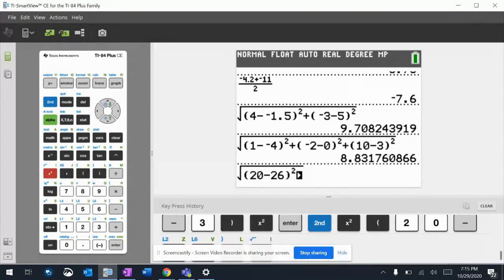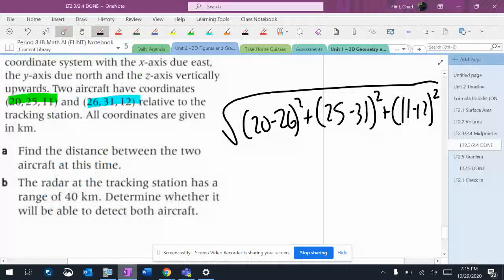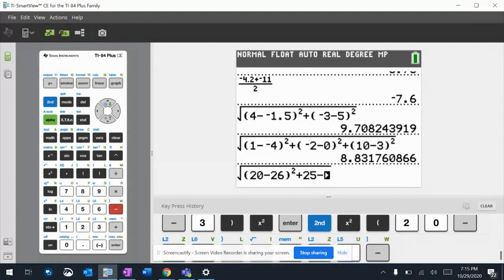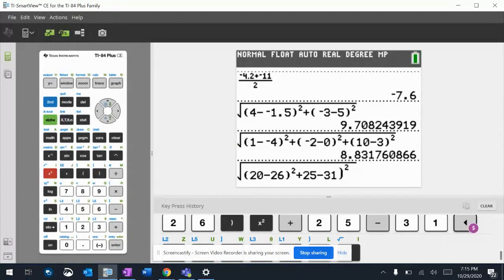20 minus 26 squared plus - make sure you got a plus in between there. The formula you don't have to look it up, it's just given to you. 25 minus 31 squared.